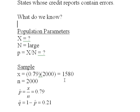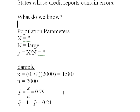We know that the number of people in our sample total is 2,000 — that's n — and that the number of people who have errors in their credit reports is 1,580, which is 0.79 times 2,000. We know the proportion of people who have errors is 0.79, and the proportion who don't have errors is 0.21, or 21%. So from our sample, 79% have errors and 21% do not.